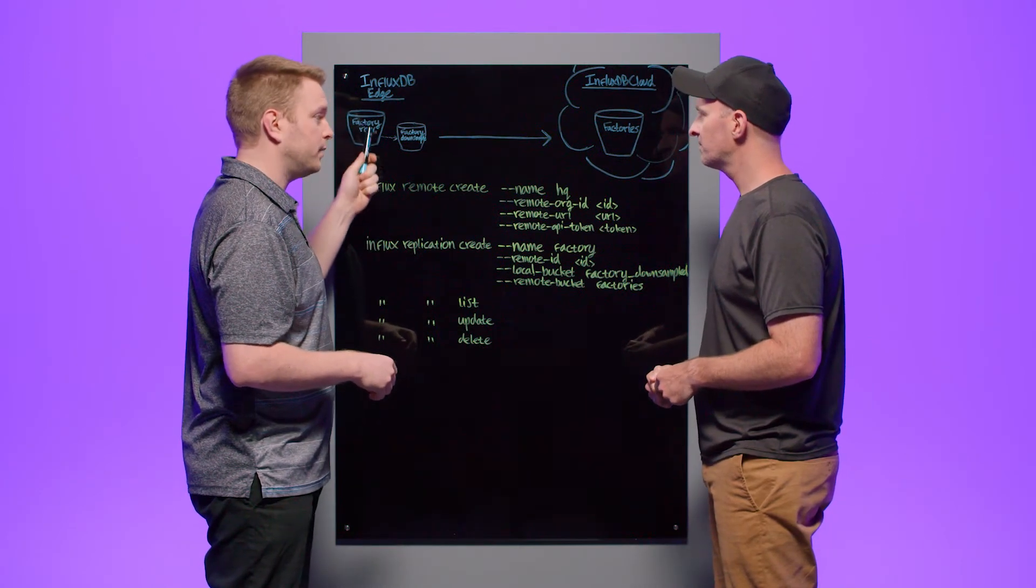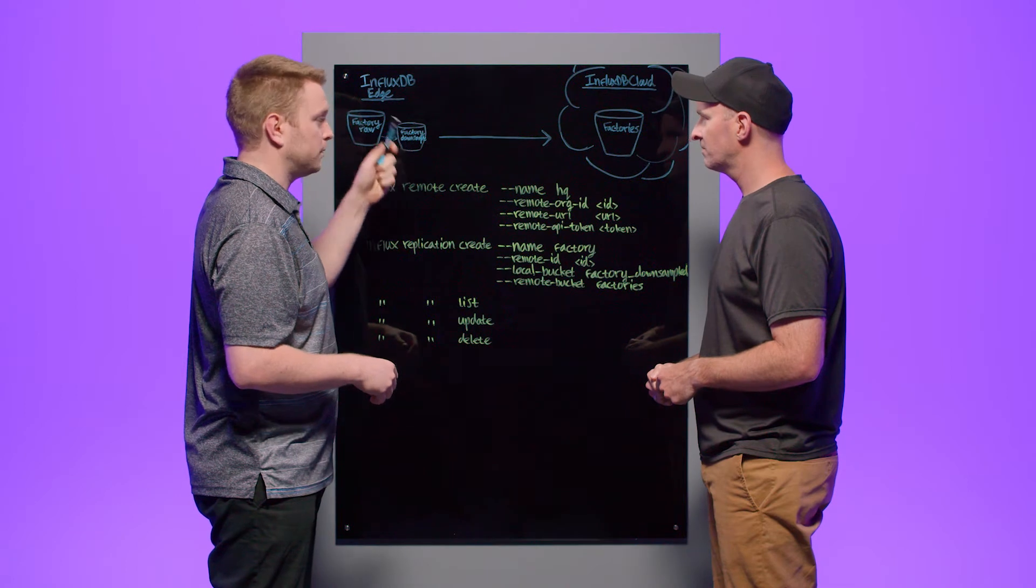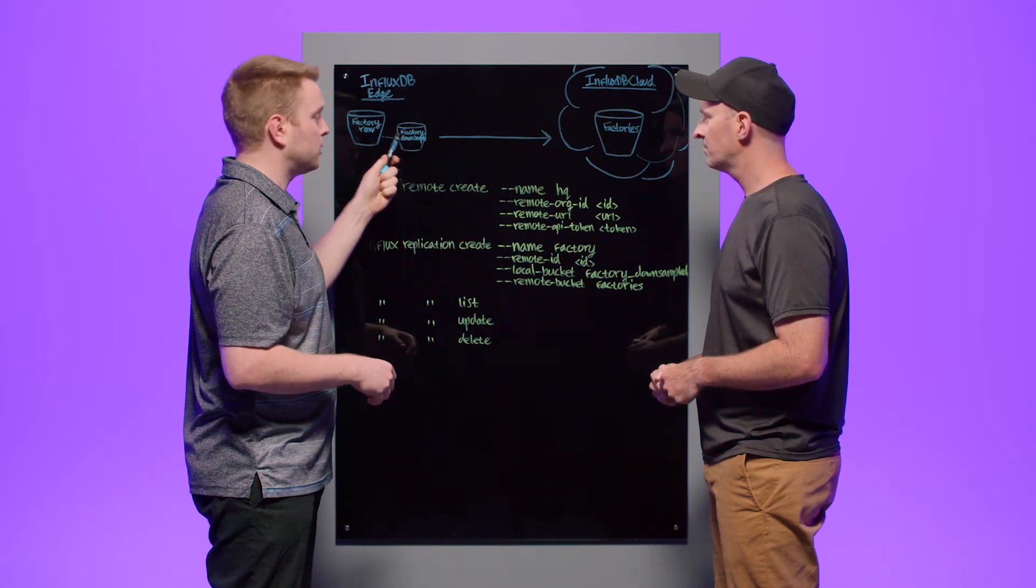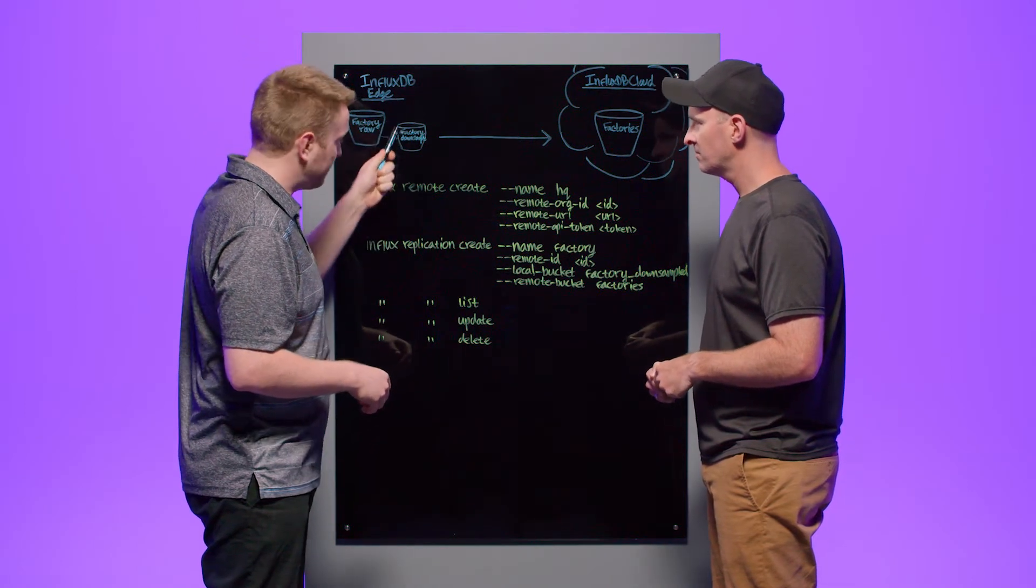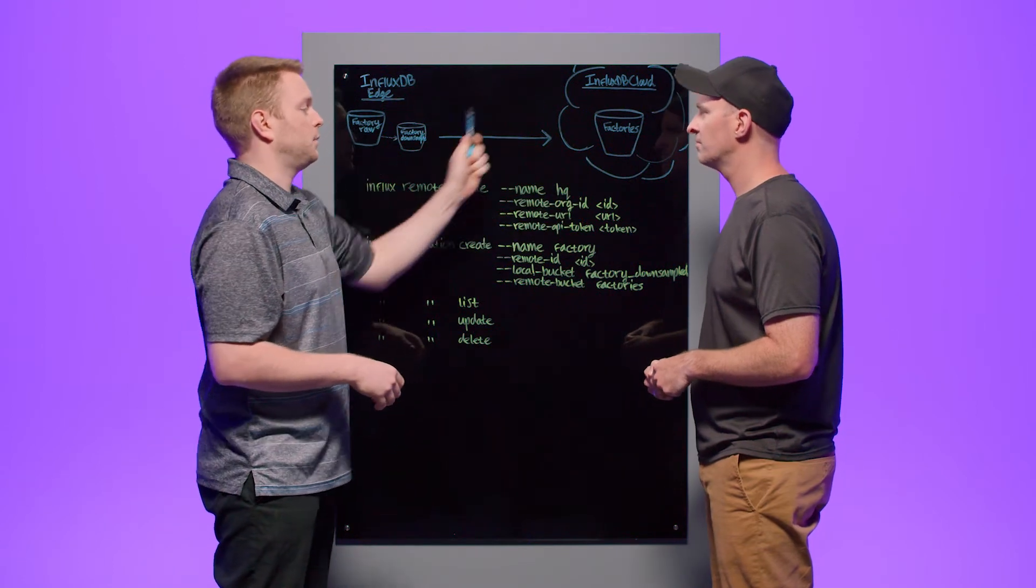They have automation built in with Flux to downsample, and we'll talk about that concept, into a smaller bucket that's aggregated. Having that replicated to cloud means that we can actually shrink the data we send over the internet, which reduces costs for businesses and reduces storage in cloud, and actually ends up making queries faster in the cloud, too.